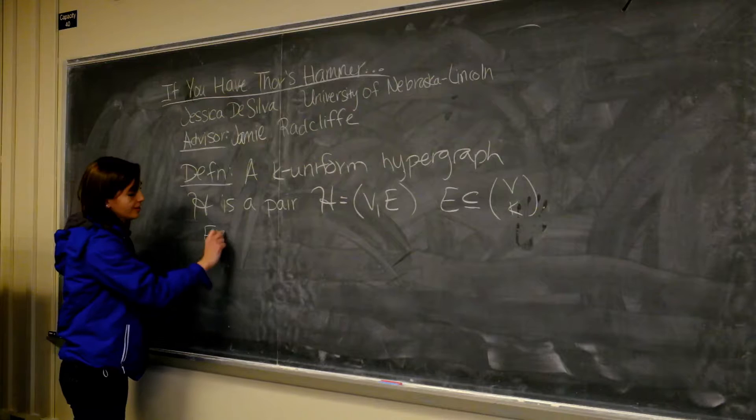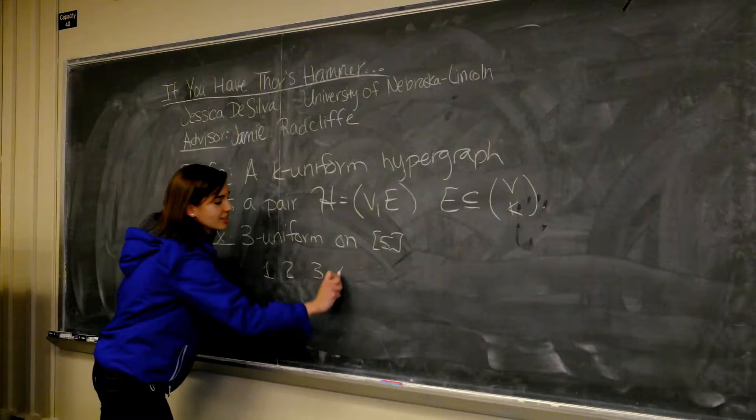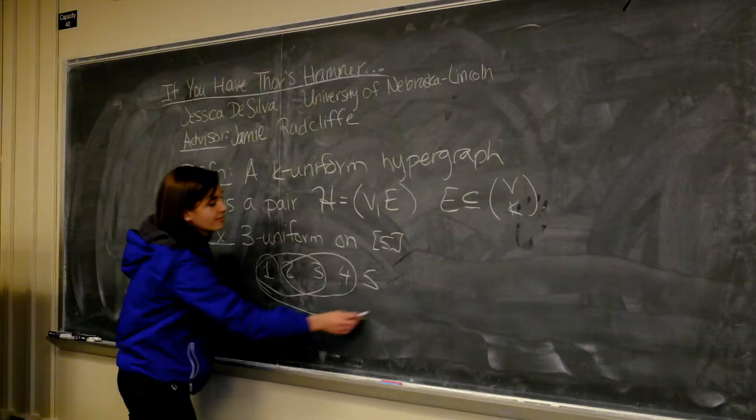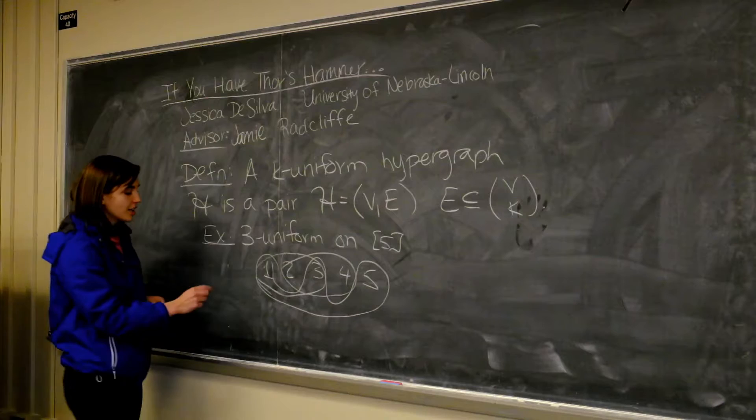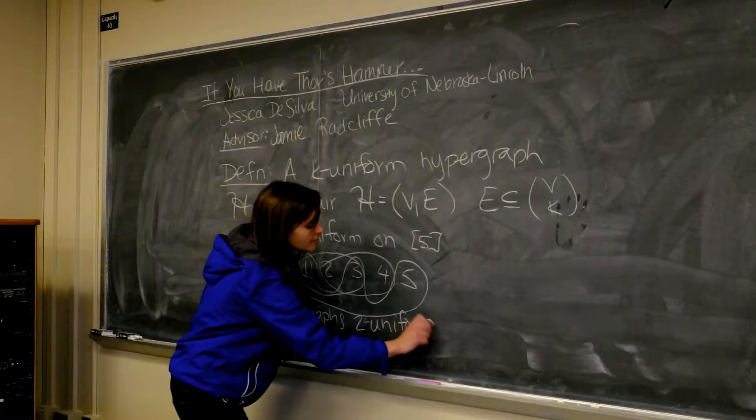Since we're K-uniform, the edges are going to be a subset of K-sets of my vertex set. We're going to look at K-uniform hypergraphs today. For example, a three-uniform hypergraph on five vertices: you just have your five vertices — one, two, three, four, five — and pick some three-element sets from this set, and that will be an edge in our graph. Graphs, the normal graphs with dots and edges, are two-uniform hypergraphs.